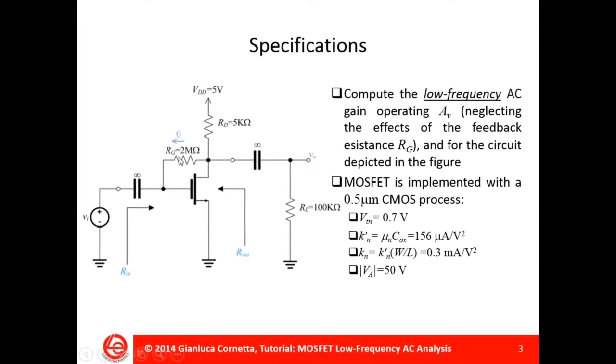I make the assumption that the voltage drop across this feedback resistance RG is zero. That is that the current flowing through this resistance is negligible. This leads to VGD equal to zero.